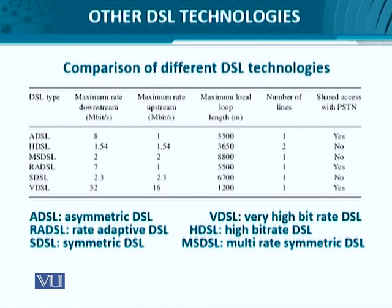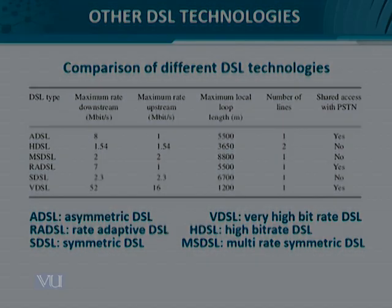Then we have Symmetric DSL (SDSL), and the very impressive Very High Data Rate DSL (VDSL). For shorter distances — if the local loop is limited to around 1,200 meters — VDSL can achieve up to 52 Mbps on the downstream and 16 Mbps on the upstream, while telephone calls can also be successfully made. So if you are fortunate enough to live in close proximity to your central office or exchange, you can subscribe to VDSL as well.